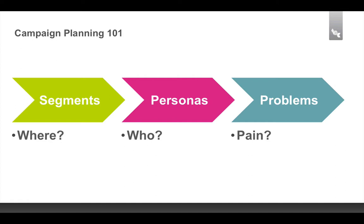Then we come directly to personas, which is who in those organizations is going to be making the decisions about investigating, buying, and actually using our products. There are several sub-categories: the decision-making unit — people actually involved in the purchasing decision — people who investigate options early stage but don't have decision-making authority, and then actual users of the product after purchase, who have a lot to say about how the product is used over time and whether the organization remains satisfied.